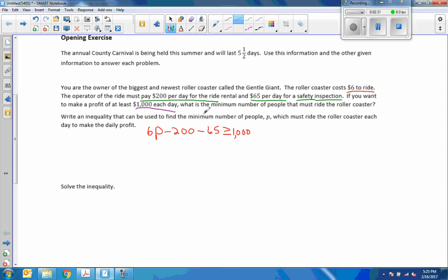Daily rental, daily inspection, and you want to make, so this has to be greater than or equal to $1,000. You want to make a profit. Profit means how much you make after all expenses are paid. In this case, it's the rent and the insurance. So here's my inequality. So now it says to solve the inequality. So I'm just going to rewrite it here. 6p minus 200 minus 65 is greater than or equal to $1,000.